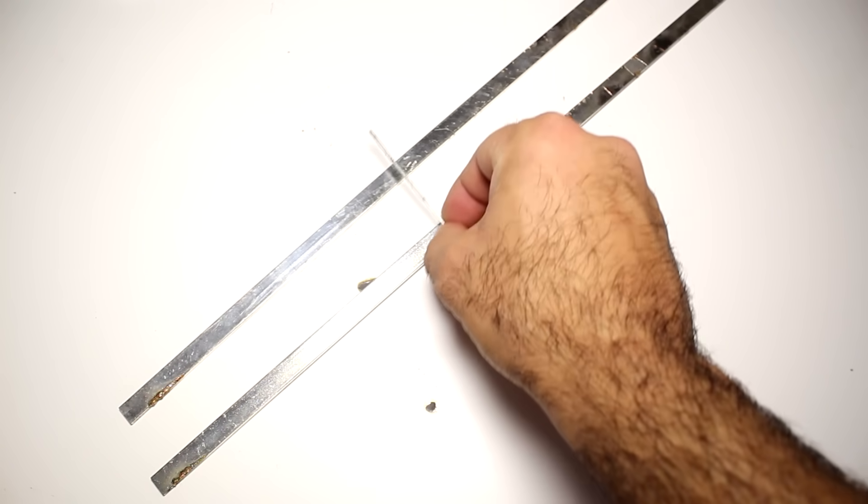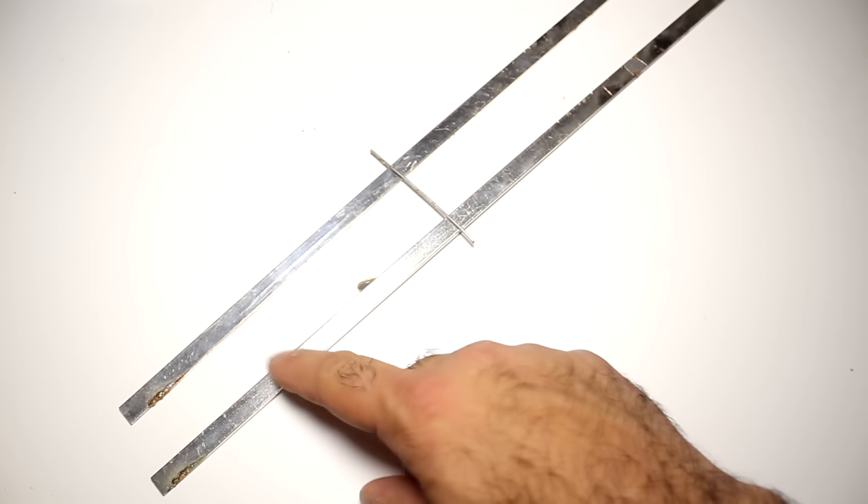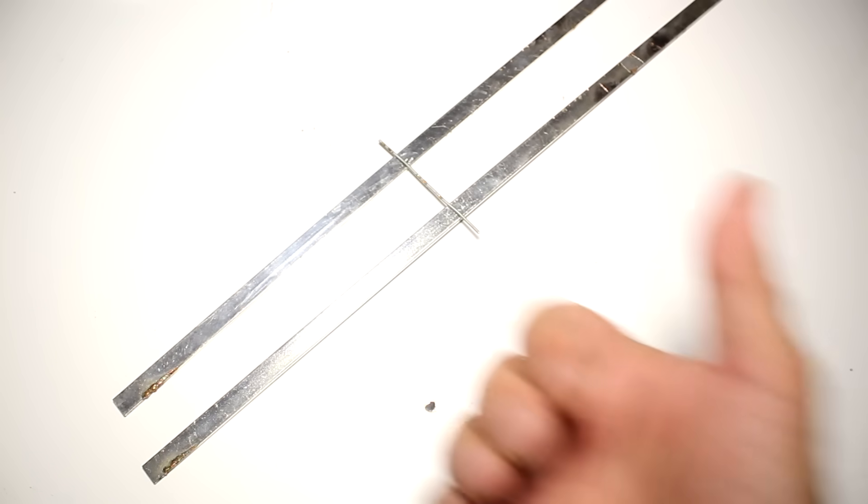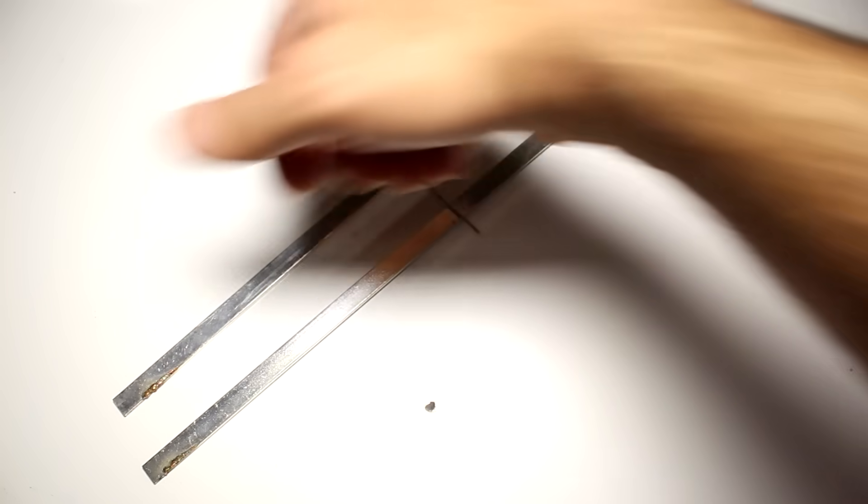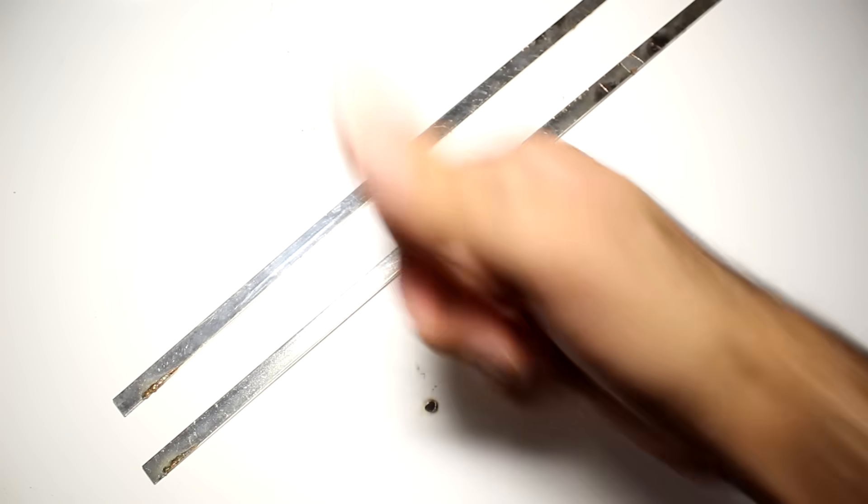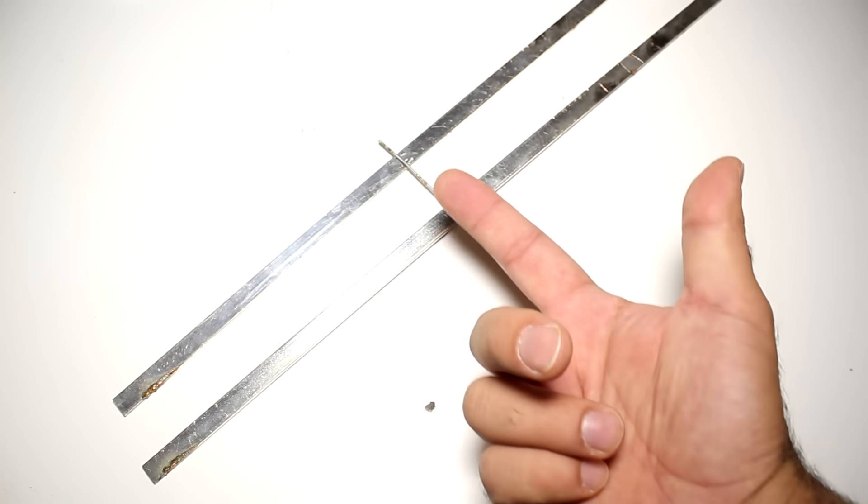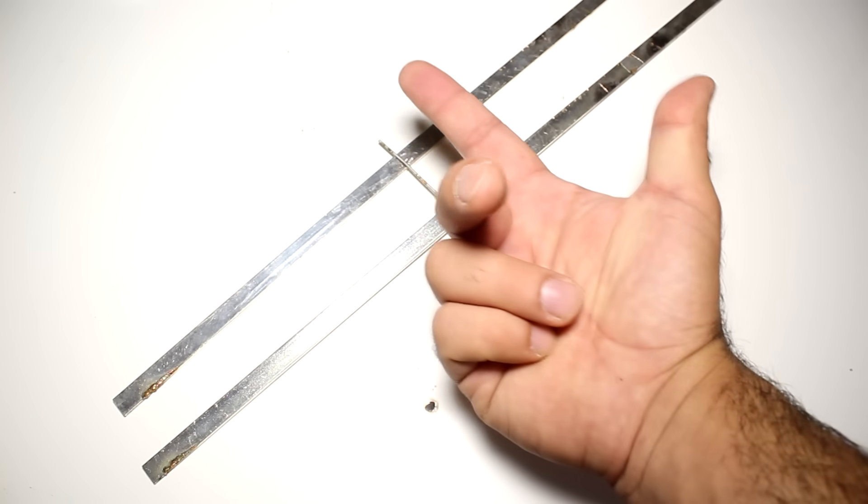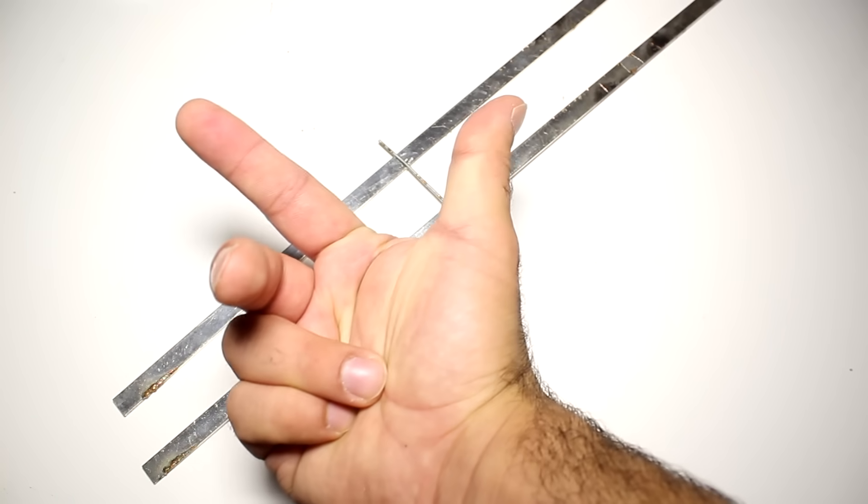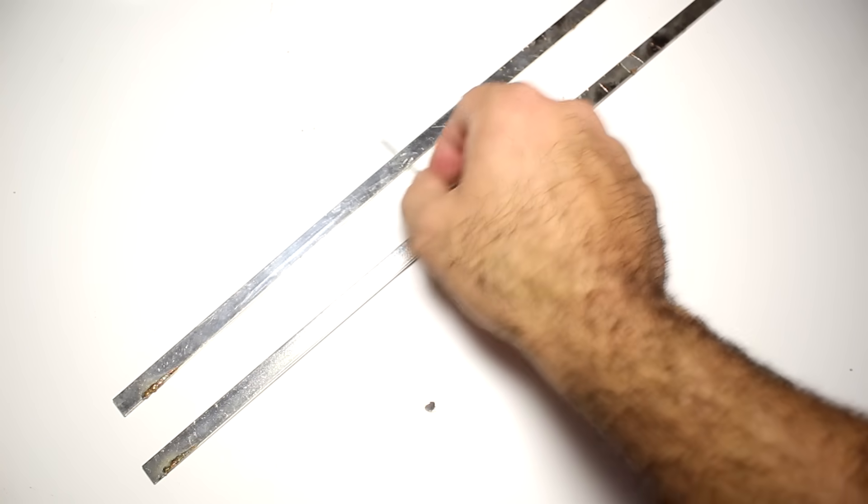So we have two rails and the projectile is shorting them. Imagine the positive of the supply is here and the current is running in the loop like that. Using the first rule, we know that the direction of the magnetic field between the rails is pointing upwards. Using the second rule, the direction of the current in projectile is that way, the field is pointing up. So the force is pointing that way and the projectile moves like that.